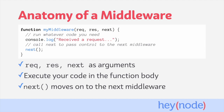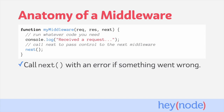Calling next signals that the middleware has finished and will trigger the next registered middleware if one exists. If something goes wrong or an error occurs, you pass the error as the first argument to next. That tells Express to skip running any other middlewares or calling the handler for the route, and proceed directly to the first error handling middleware. We'll talk more about error handling middleware later on in this tutorial.